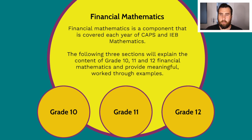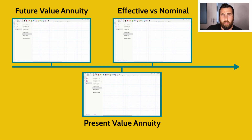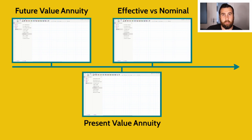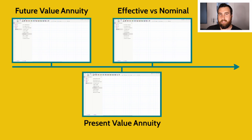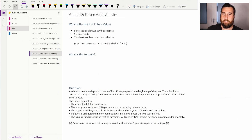This series is designed to help learners crunch through financial maths questions without too much of a fuss. In Grade 12 there are three main ideas focused on: your future value annuity, your present value annuity, and effective versus nominal interest rates. What I'd like to look at now is future value annuity, so let's dive in.